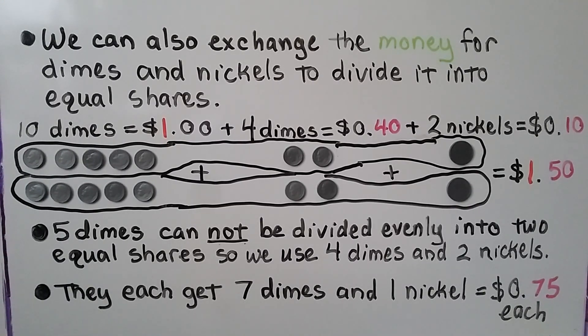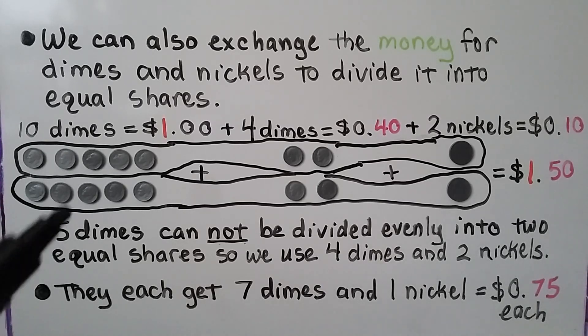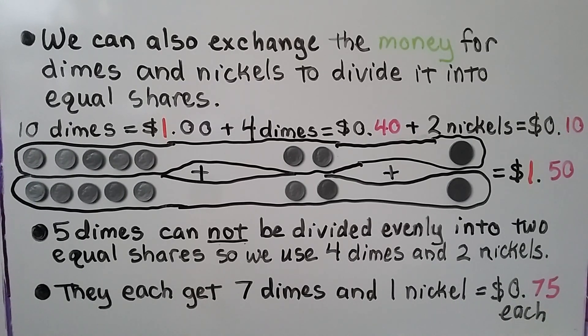Can you think of another way they could have exchanged the money for different coins? They could have even used one hundred fifty pennies, couldn't they?